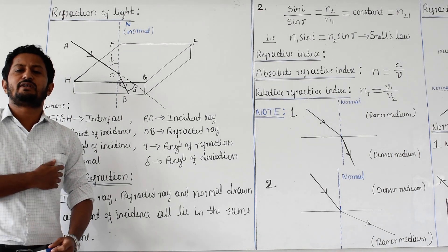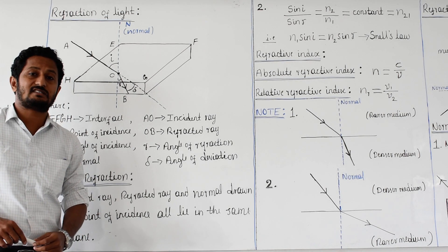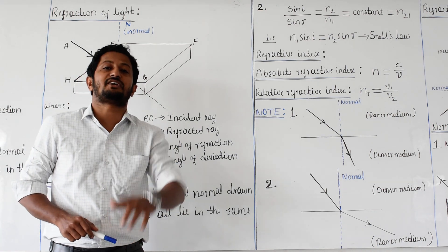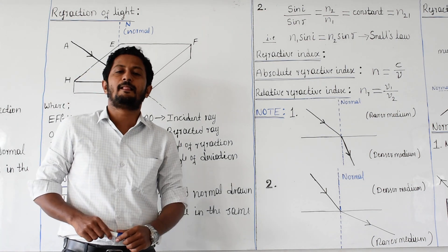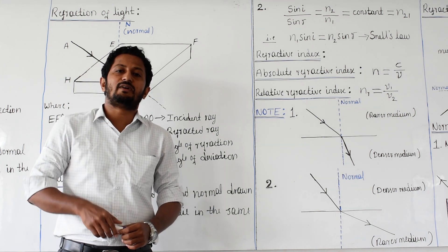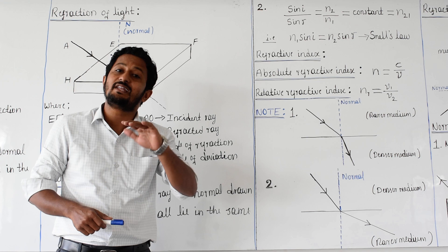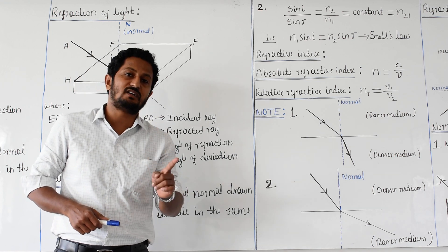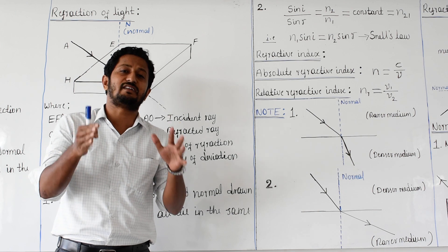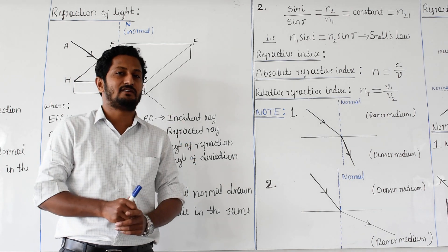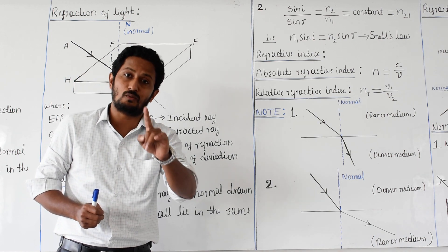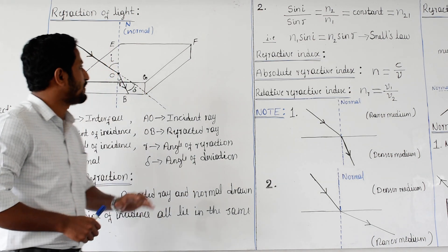Good morning students. We will continue from the previous class. In that previous class I was explaining refraction of light — the bending of light when it passes obliquely from one transparent medium to another is called refraction of light. You must mention that word 'obliquely'; that is very important.